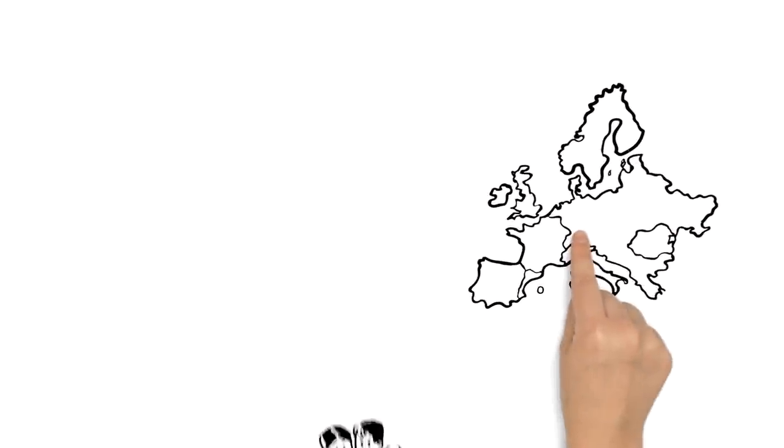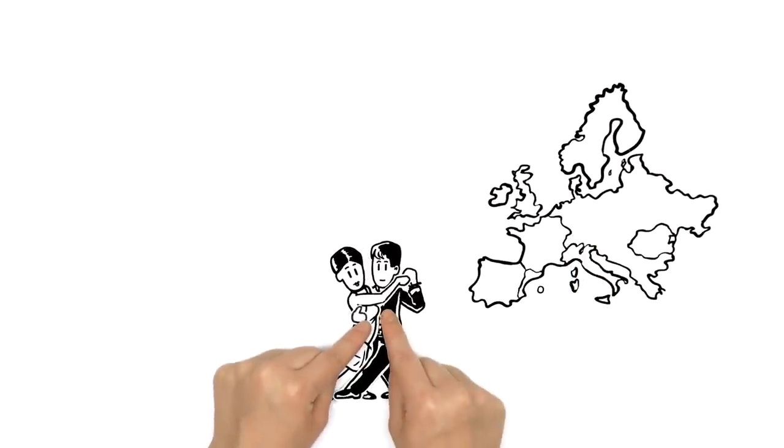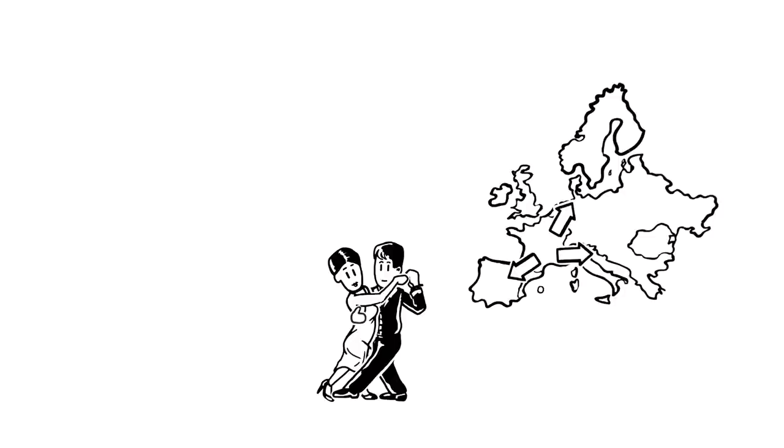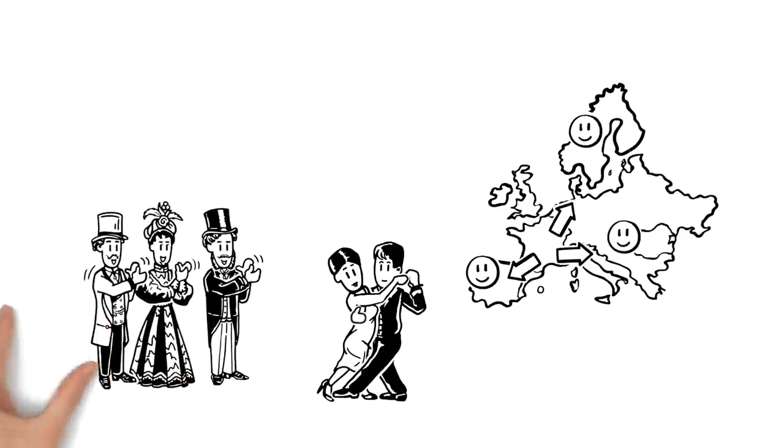In Europe, after the newly discovered style was adapted to be more socially acceptable, it soon spread quickly and enjoyed enormous popularity. Eventually, even the upper class got into it, and in the end, the tango became a standard dance around the world.